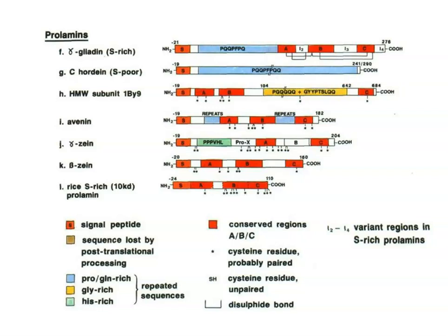The structure of prolamine shows three conserved regions A, B, and C. These three conserved regions are present in all prolamines except C-hordeins. All other prolamine seed storage proteins possess these three conserved regions, which also show homology with each other and contain cysteine residues that may be conserved within or between the different groups of the protein.